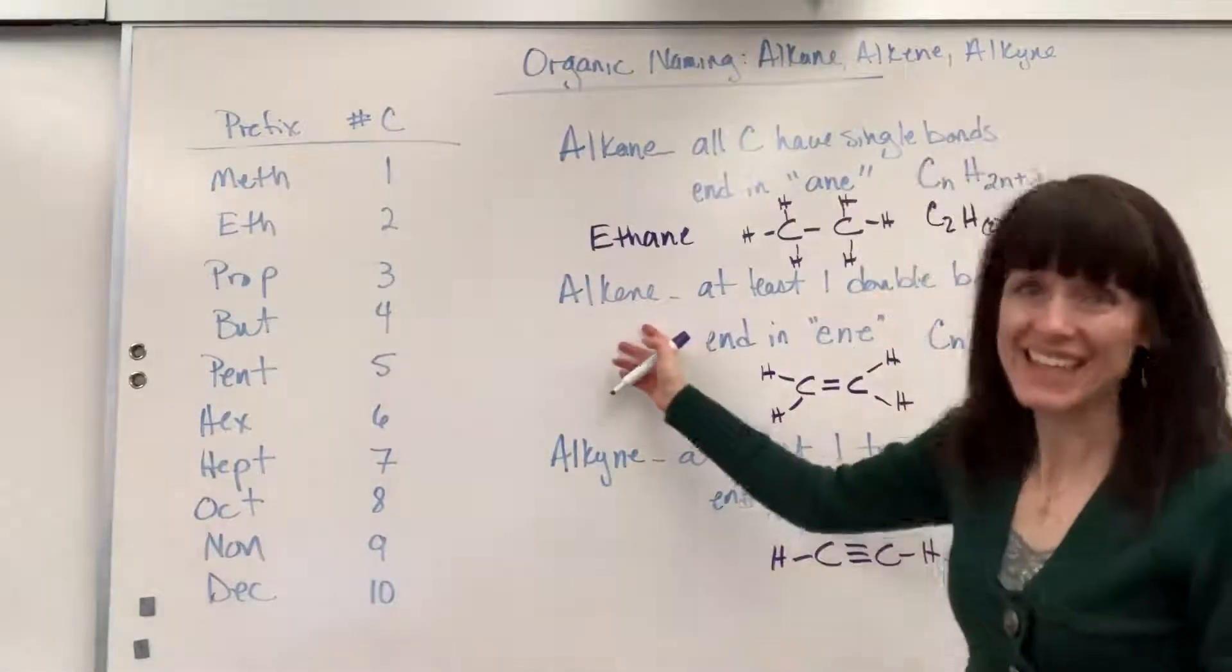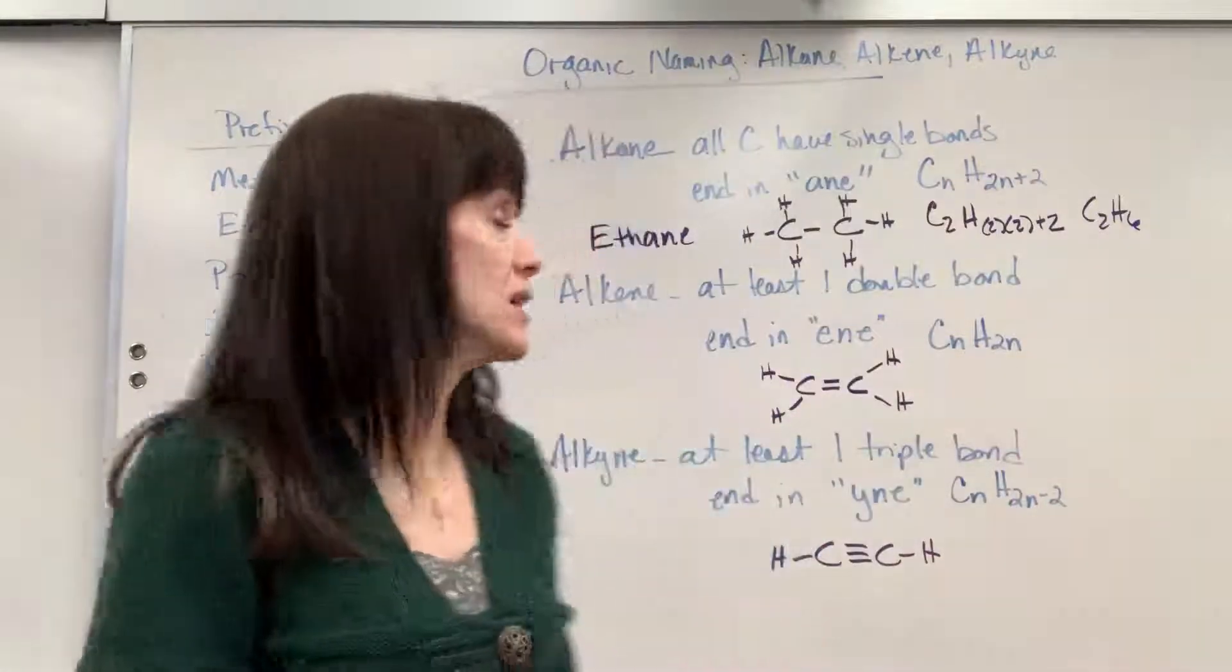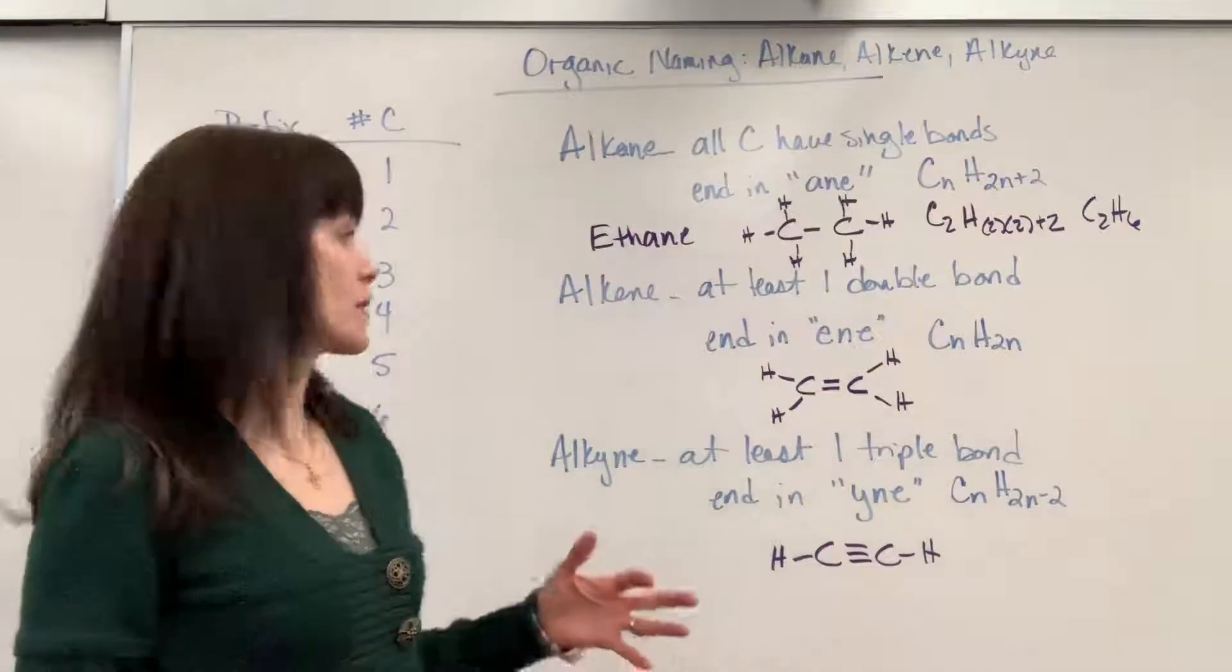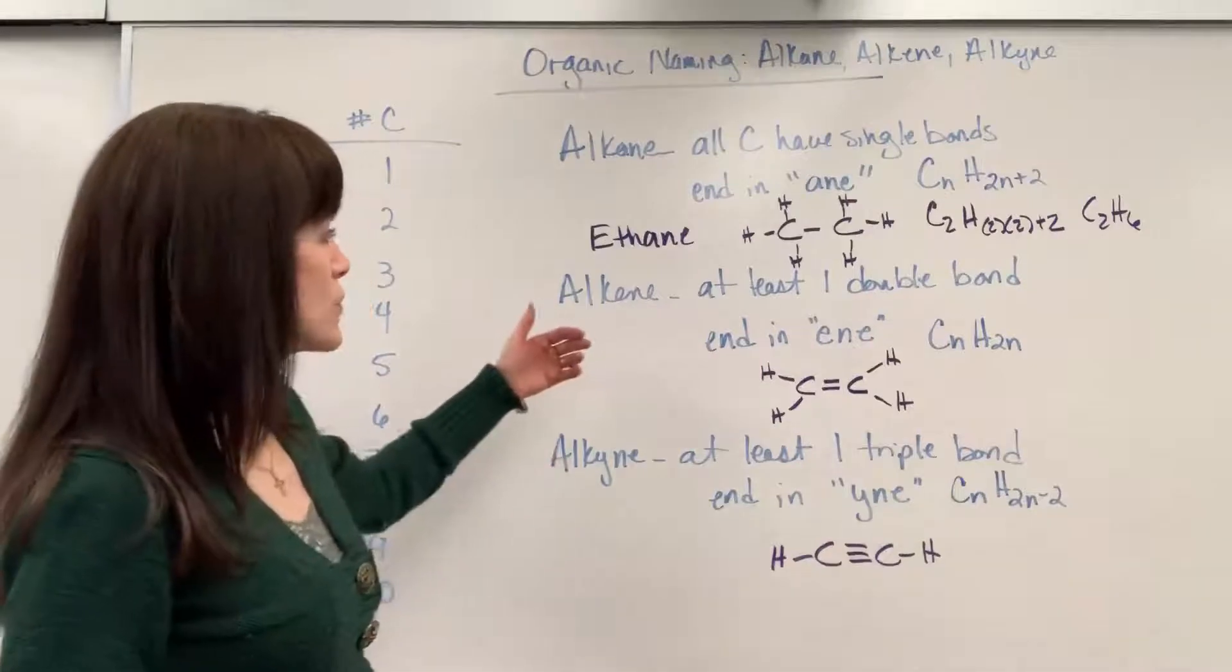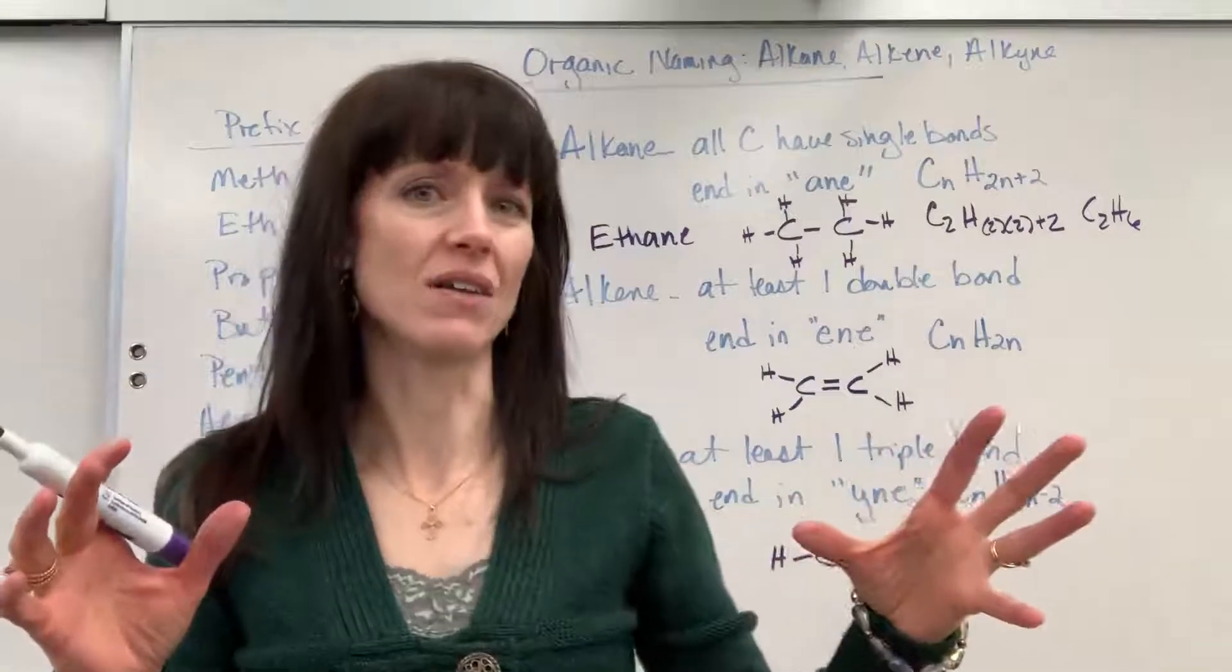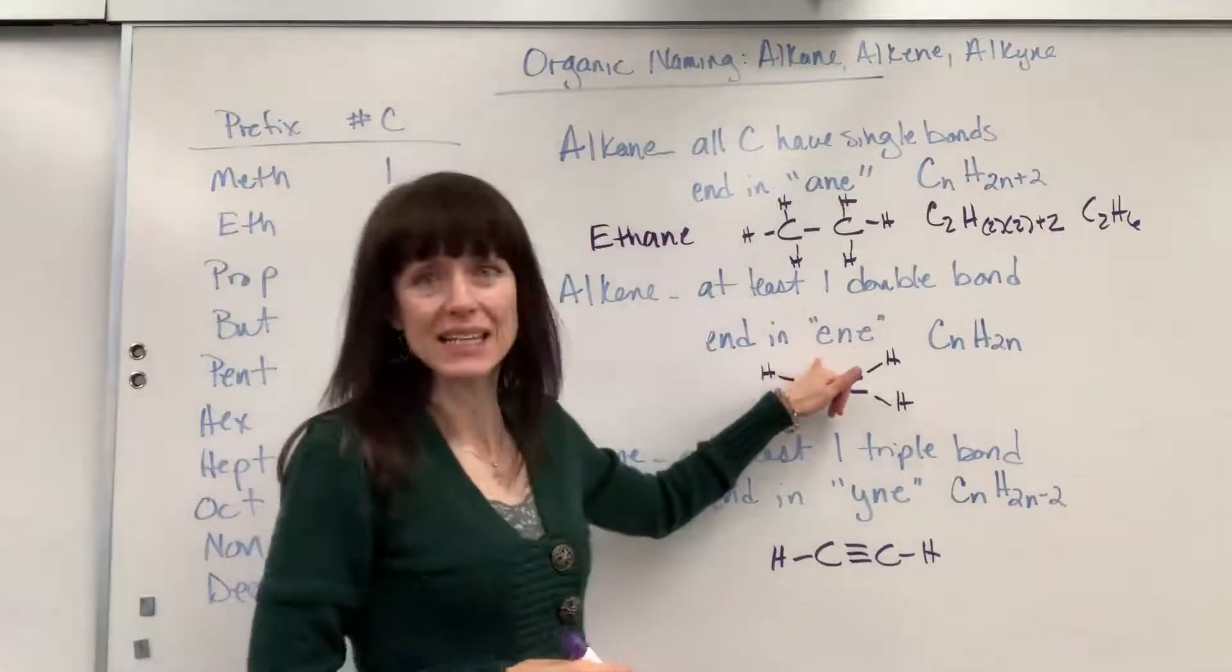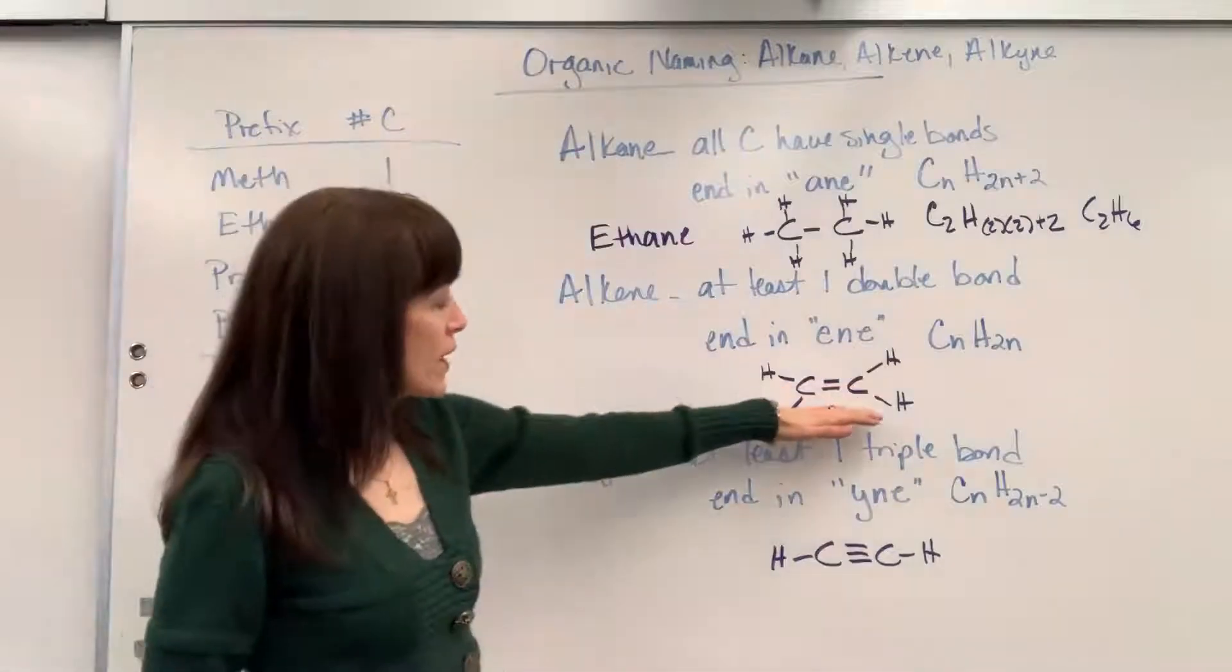Let's go to the next one. Alkene. This is when you have a double bond somewhere in that chain of carbons. So the generalized formula on this is CNH2N, and that's when you have one double bond in the long chain of carbons. The ending on this is ene, E-N-E.